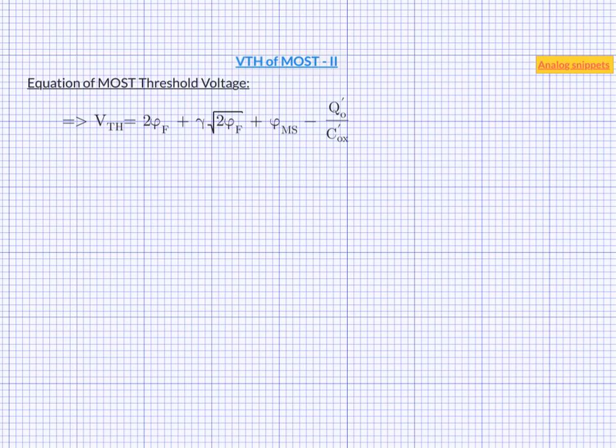Let us first recall what each individual term mean in this equation. The first term is the surface potential of silicon, that is it represents the voltage across silicon. Second term represents voltage across oxide. Third term is gate substrate contact potential difference.